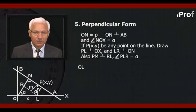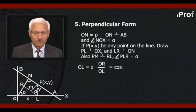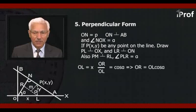OL is equal to x. Therefore, OR upon ON is equal to cos alpha. That is, OR is equal to ON·cos alpha, which is equal to x·cos alpha.